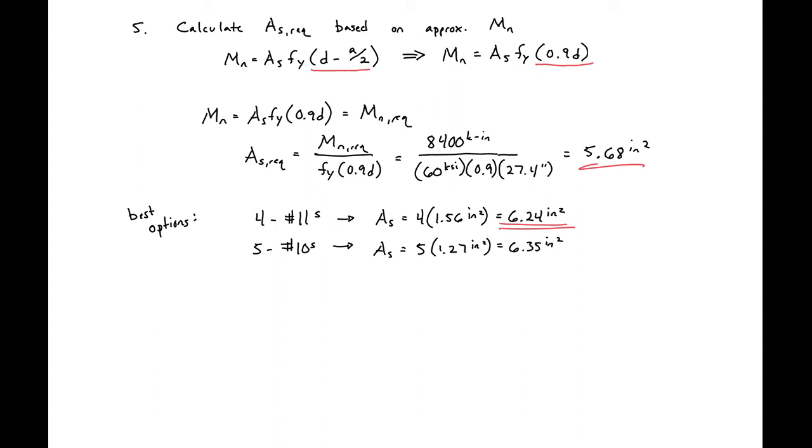If you remember, we assumed a bar diameter with a number 9 bar. So we need to go back and now recalculate our D based on our number 11 bar. We'll take our D equal to our overall height, 30 inches, and subtract out half of our bar diameter. 1.41, the diameter of our number 11 bar divided by 2. We'll take out 0.5 inches which is the diameter of our stirrups, and then 1.5 inches is our cover. We'll get D equal to 27.3 inches. This will be our D value that we'll use moving forward, and also the area of steel that we'll use moving forward in this example.